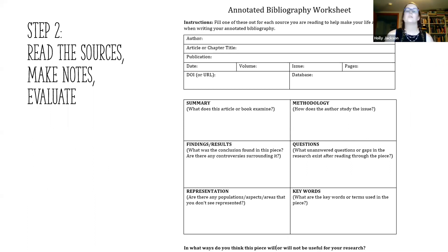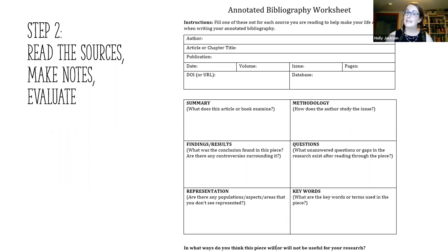The worksheet sections include: a summary of the article, book, or other resource; the methodology — how did the author study the issue, did they do extensive reading or conduct a lab experiment?; findings or results; questions or gaps in the research that still exist after reading; representation — are there populations, aspects, or areas not represented that should be?; and keywords — what terms are used in this piece. When you look up an article in the databases, you'll see subject headings listed that are keywords you can use in your search.